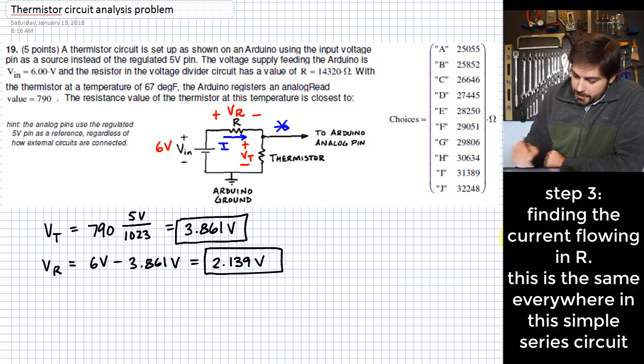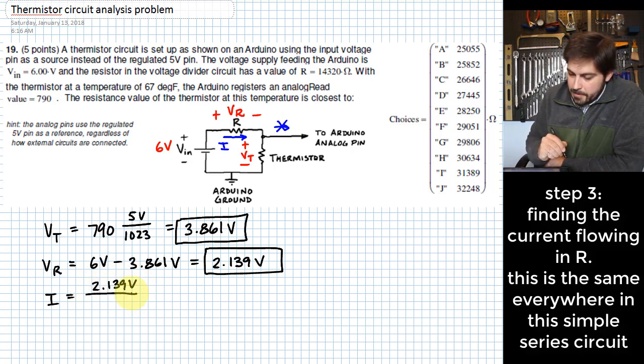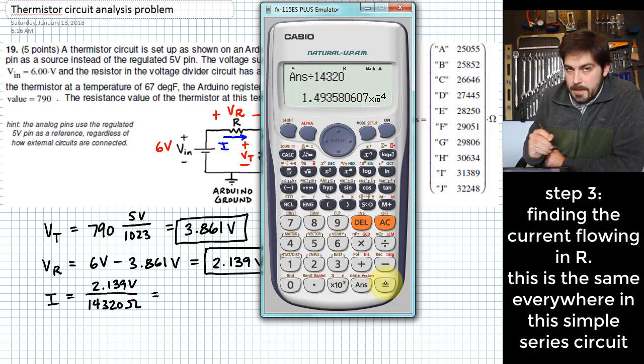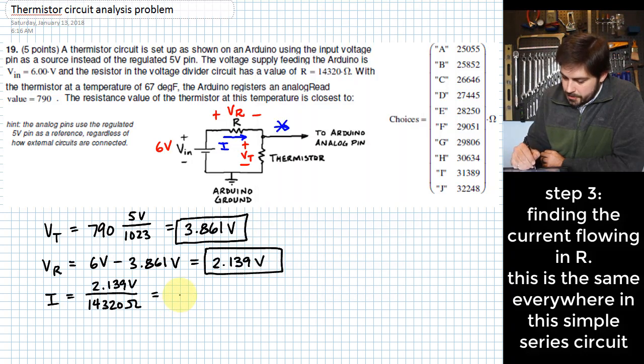So to do that, what I'll do is calculate I as this voltage of 2.139 volts divided by the resistance value that we have on resistor R, 14,320 ohms, which gives us a very small value. It's not unexpected that it's a small value because these are high resistance values. So we'll say 1.494 or so times 10 to the negative 4th amps.